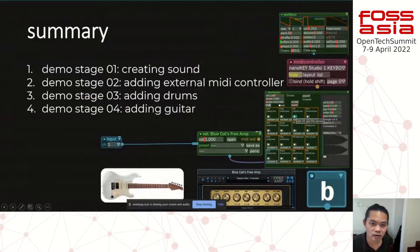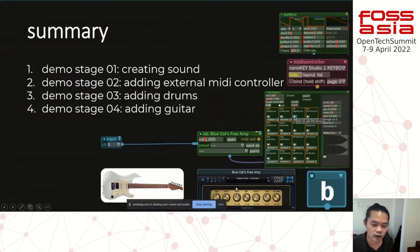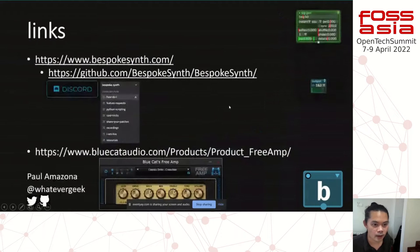We've played sound using an oscillator — saw wave, square wave, and so on. We tried adding an external MIDI controller with a plucked string synth that we can use to drive inputs. We also added drums with a drum player. For the guitar, we added an external virtual amp effect and recorded guitar sounds. These are the links — if you want to know more about Bespoke, you can check out bespoke.com.